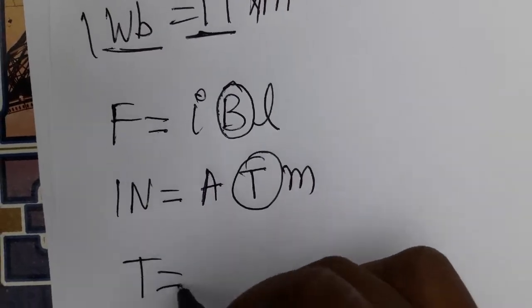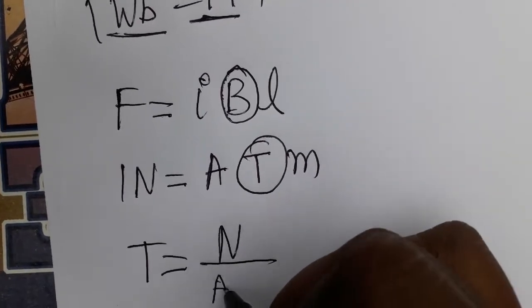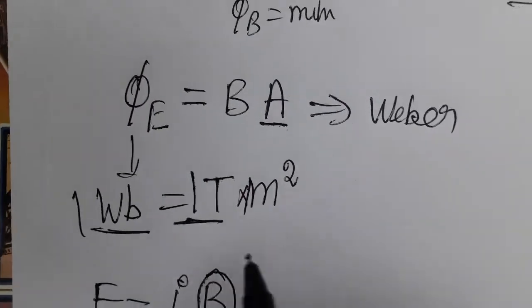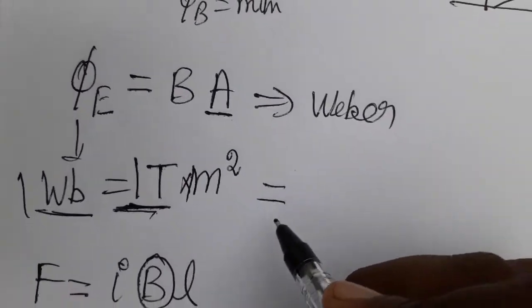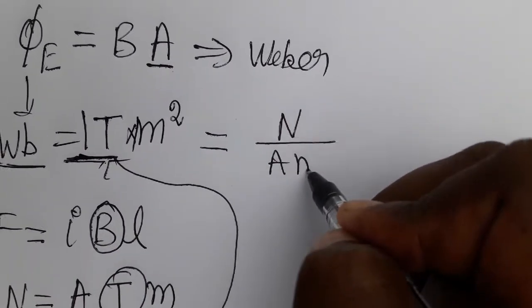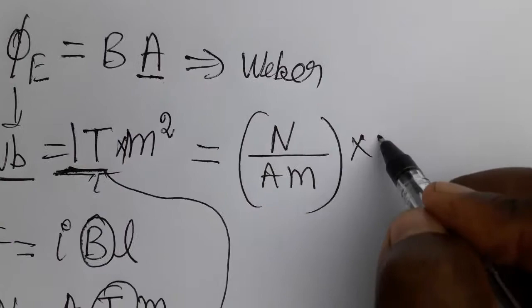One tesla equals newton by ampere into meter. Now we found what one tesla is. We substitute this here, so newton by ampere into meter, times meter square.